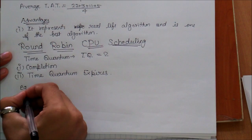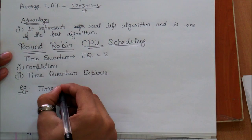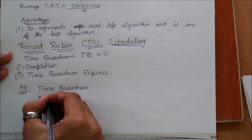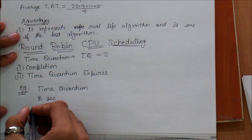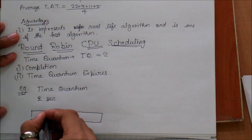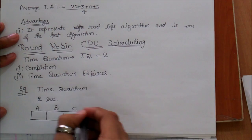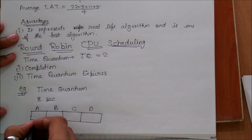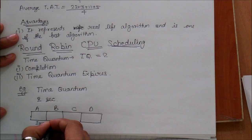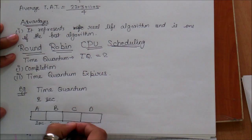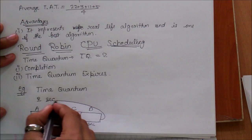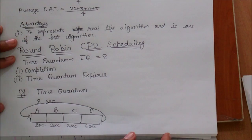Let us understand this by an example. The time quantum we are selecting here is 2 seconds. Suppose we have four processes in the ready queue. First we execute A for 2 seconds, then move to B and execute for 2 seconds, then move to C and execute for 2 seconds, then move to D and execute for 2 seconds, and again come back to the front and repeat this cycle until each process is completed.